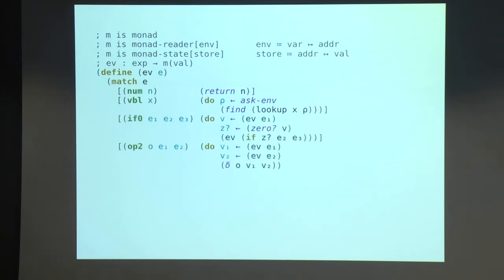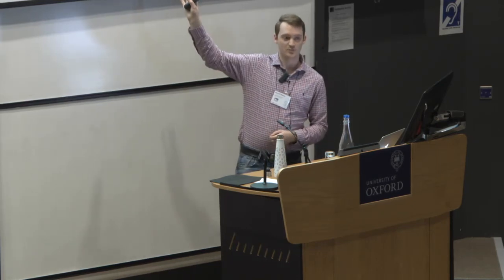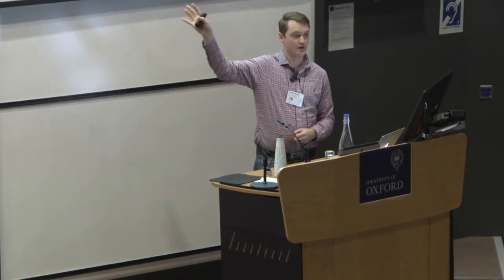Let's get to some more complicated compound expressions. So here's conditionals. It's the standard top-down recursive definition that you're used to. We evaluate the conditional. We check to see if it's zero. And then we recursively evaluate either the left or the right branch. And for operators, we evaluate the left and the right-hand side. And then this delta interpretation for operations as applied to values, I'm also going to leave that as a parameter and play with that later in the talk.